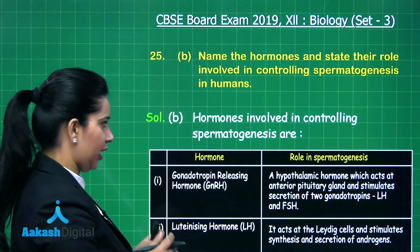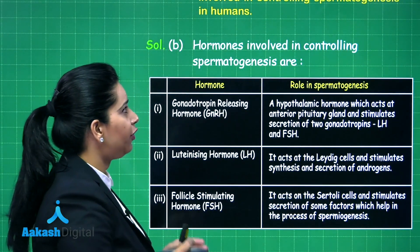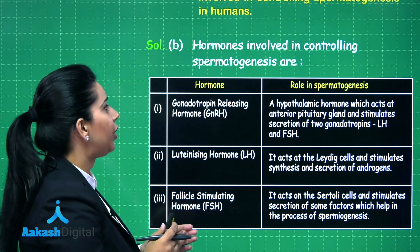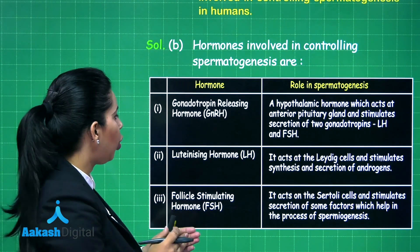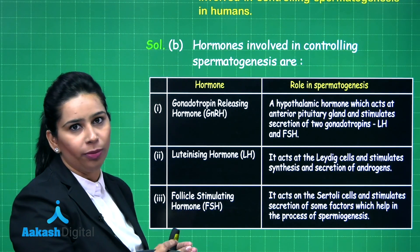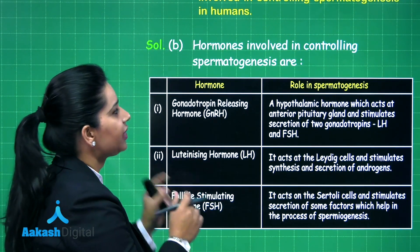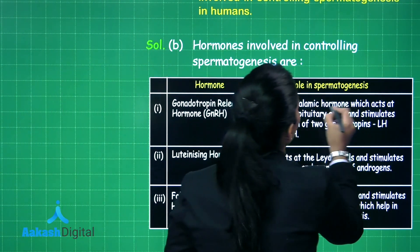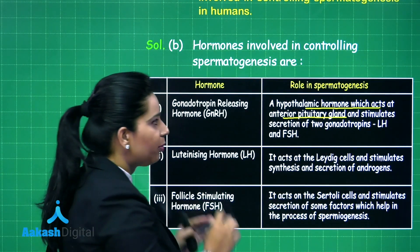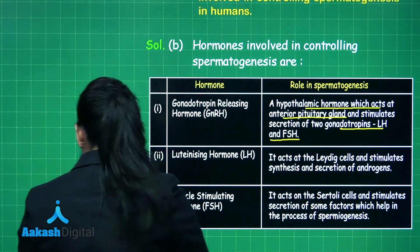The hormones involved in controlling gametogenesis are: first, gonadotropin releasing hormone; second, luteinizing hormone; third, follicle stimulating hormone. Gonadotropin releasing hormone is a hypothalamic hormone which acts at the anterior pituitary gland and stimulates the secretion of gonadotropins, that is LH and FSH.